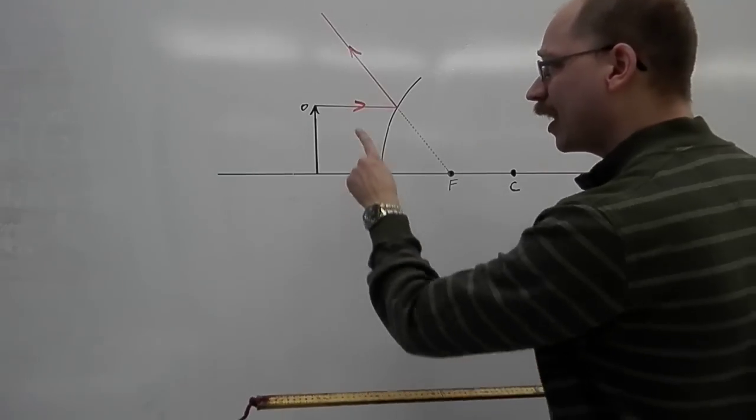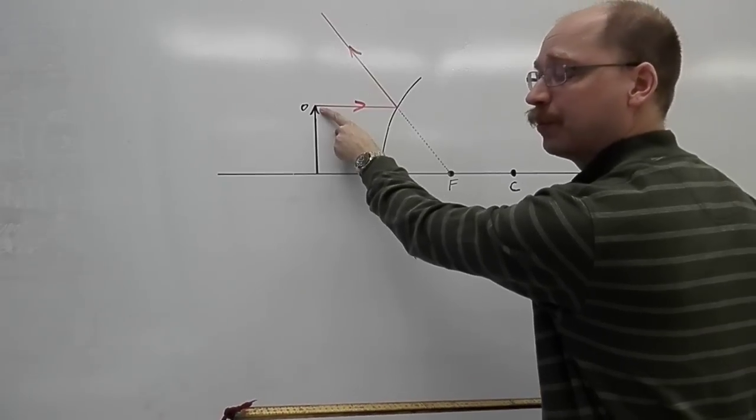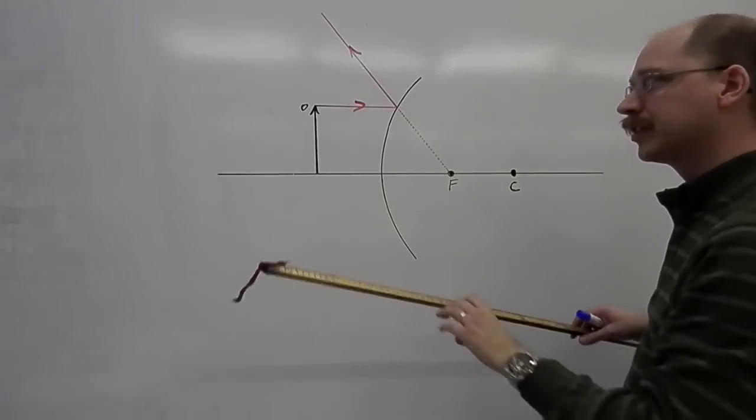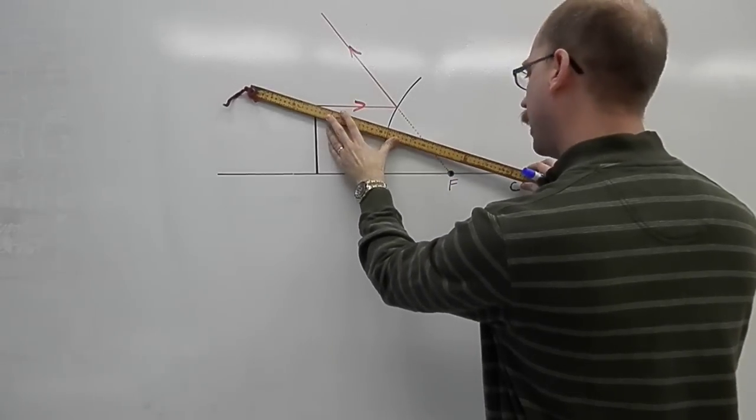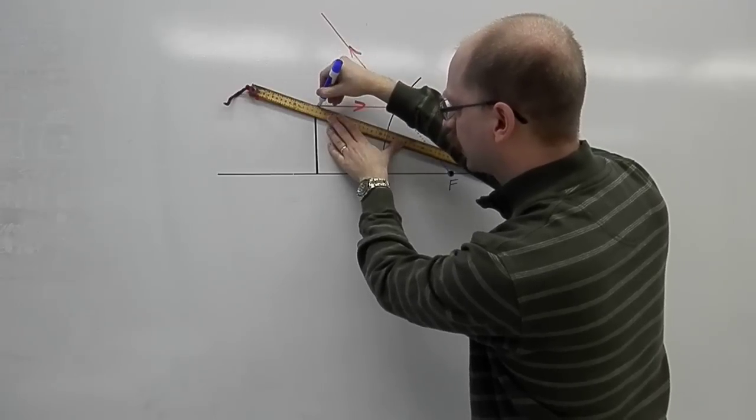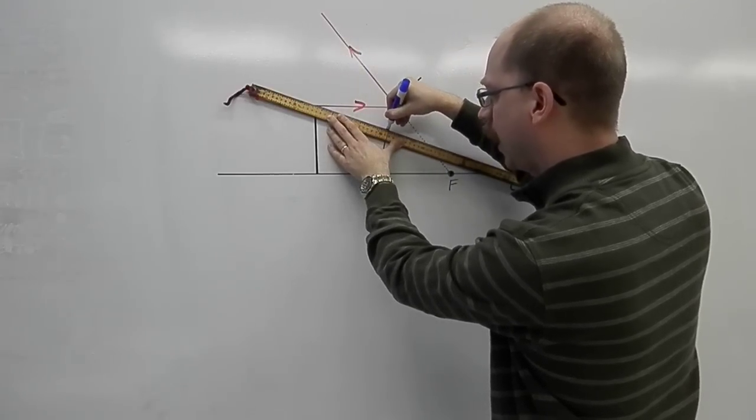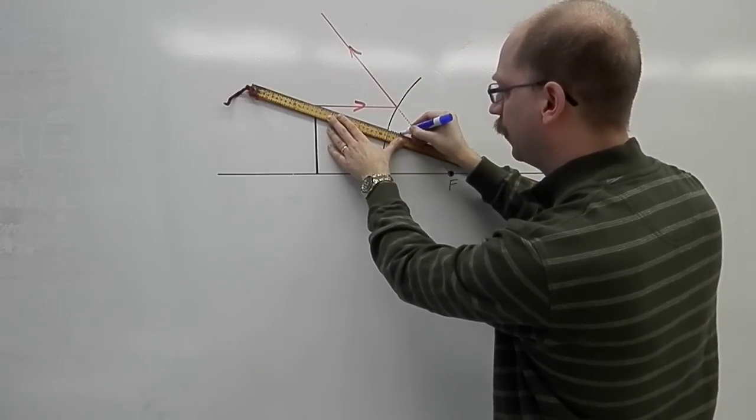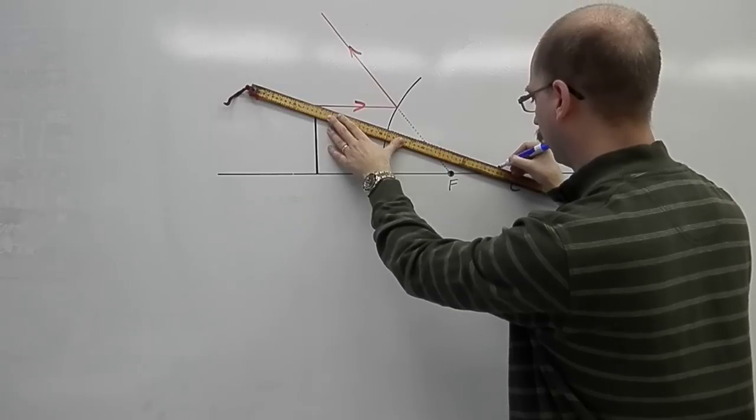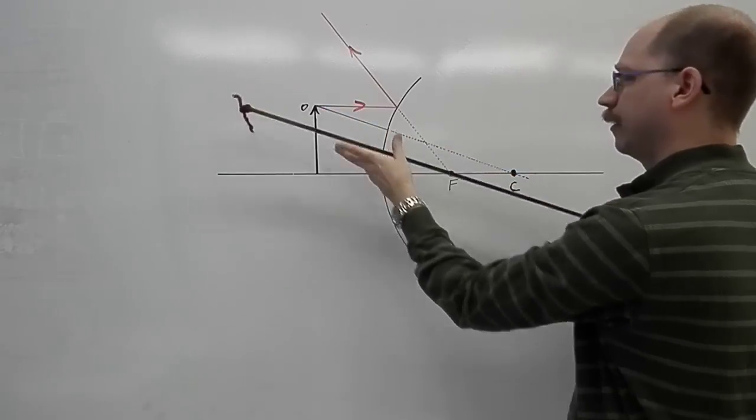So for that one, I go from, again, the same spot on my object, and I aim all the way back here to the center. And I'm going to have to draw part of it as a solid ray coming like that. And then as soon as I go behind the mirror, I know that I have to become dotted as a virtual ray. Like that. Okay?